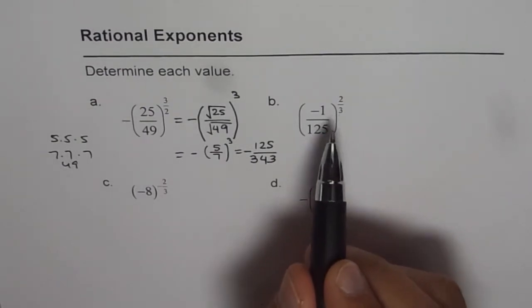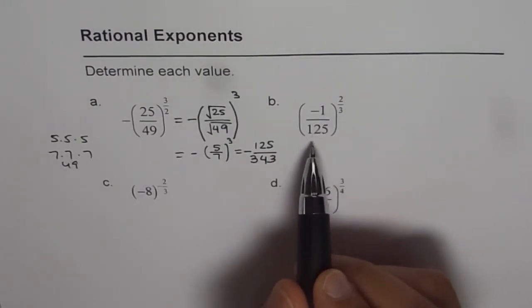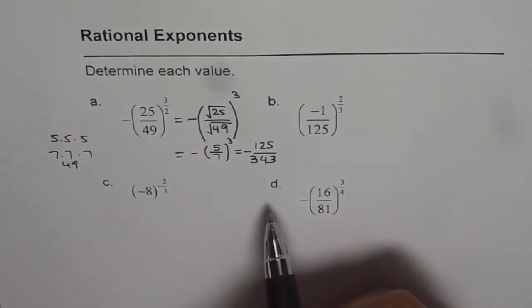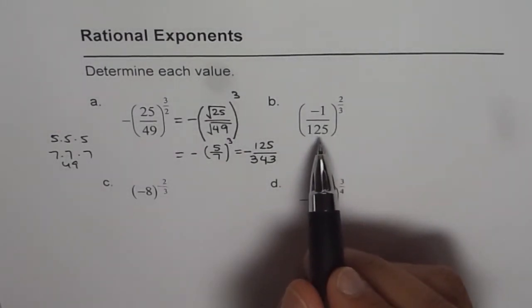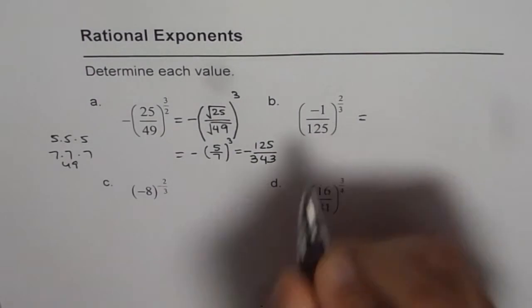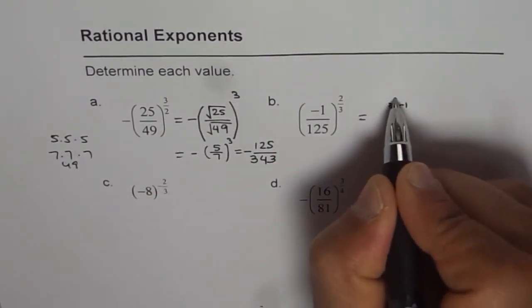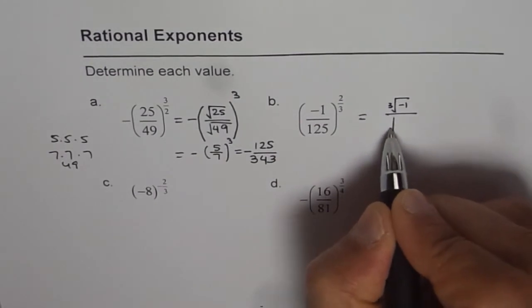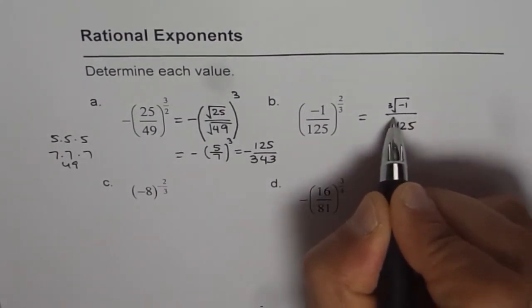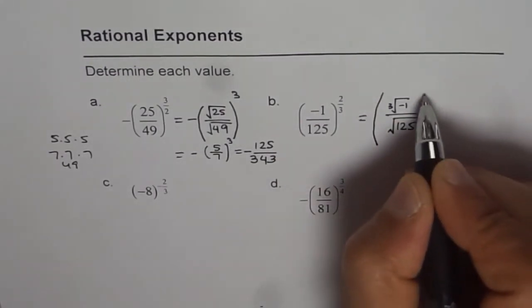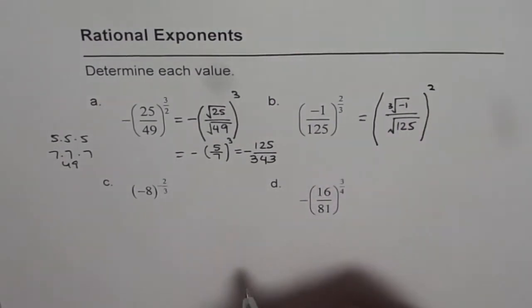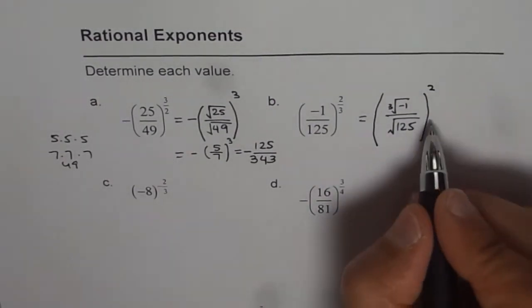In that case, we will end up with smaller numbers to work with. So what we have here is cube root of negative 1 divided by cube root of 125, and then square of the rational number.